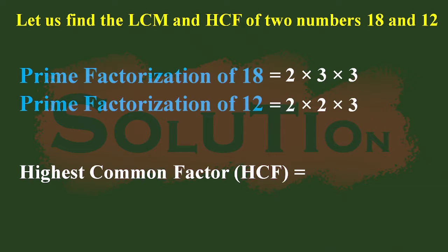Similarly, the prime factorization of 12: we write 2 into 6, and 6 can be further divided as 2 into 3. So the final result is 2 into 2 into 3.